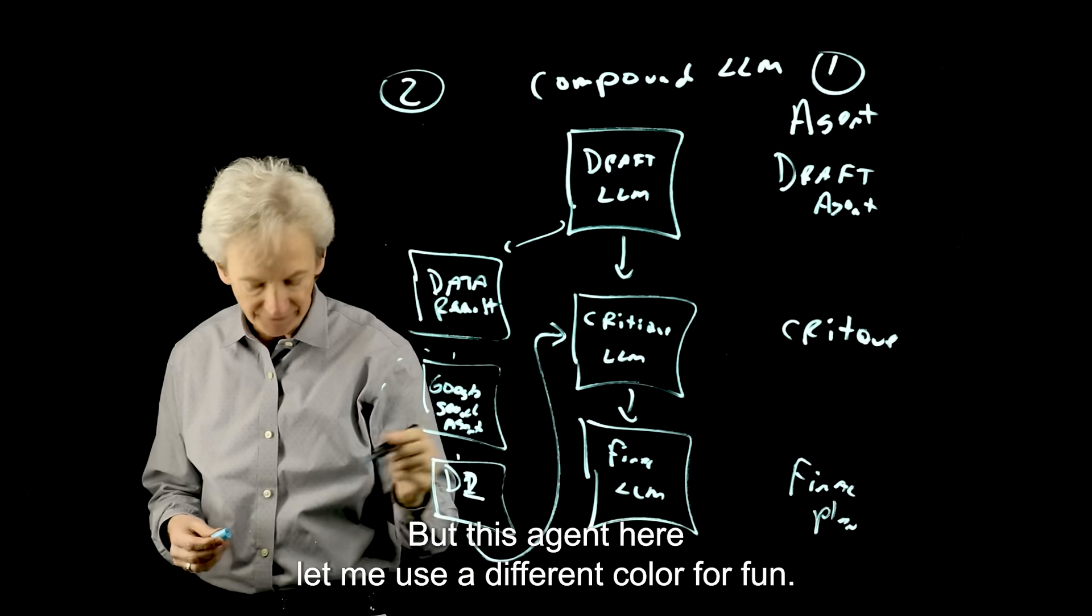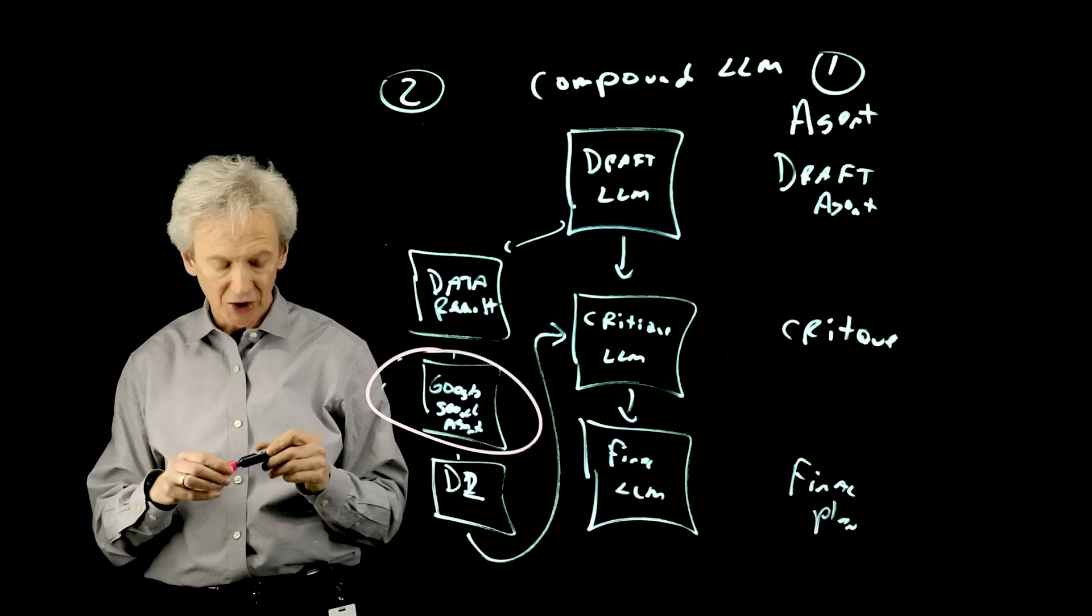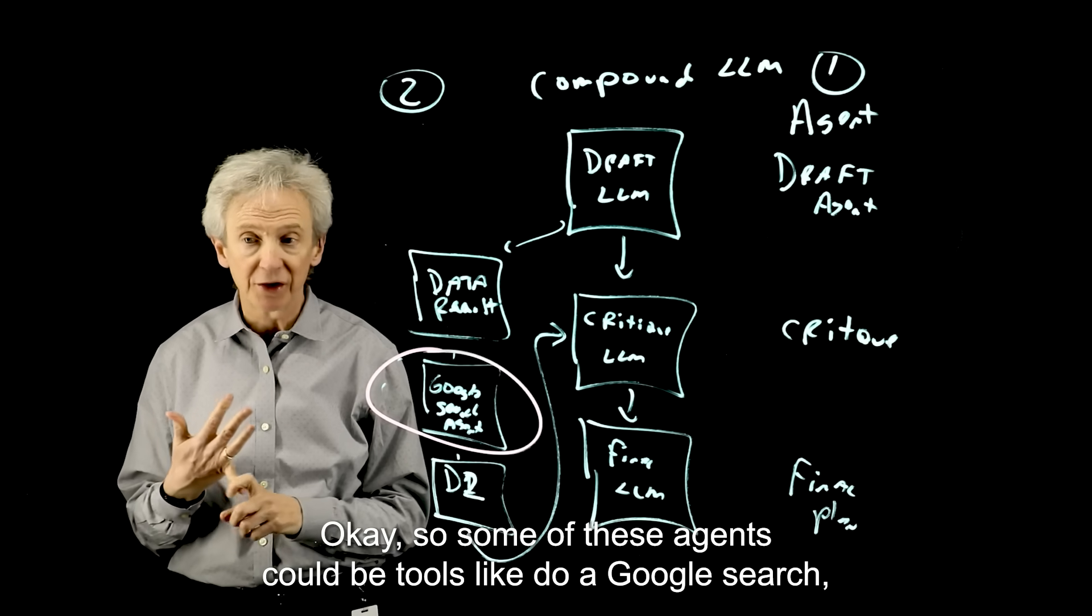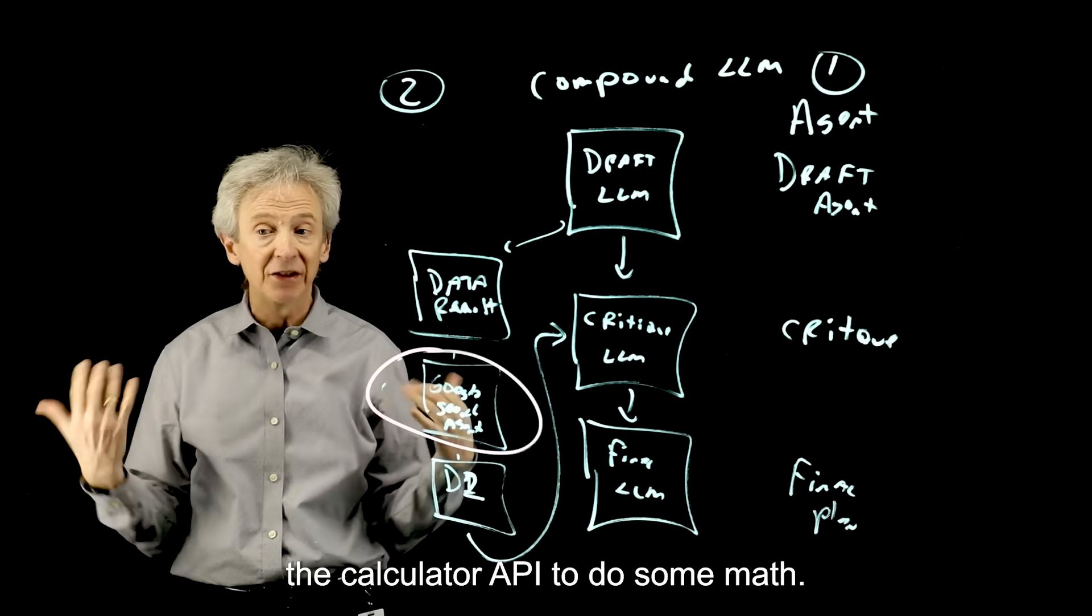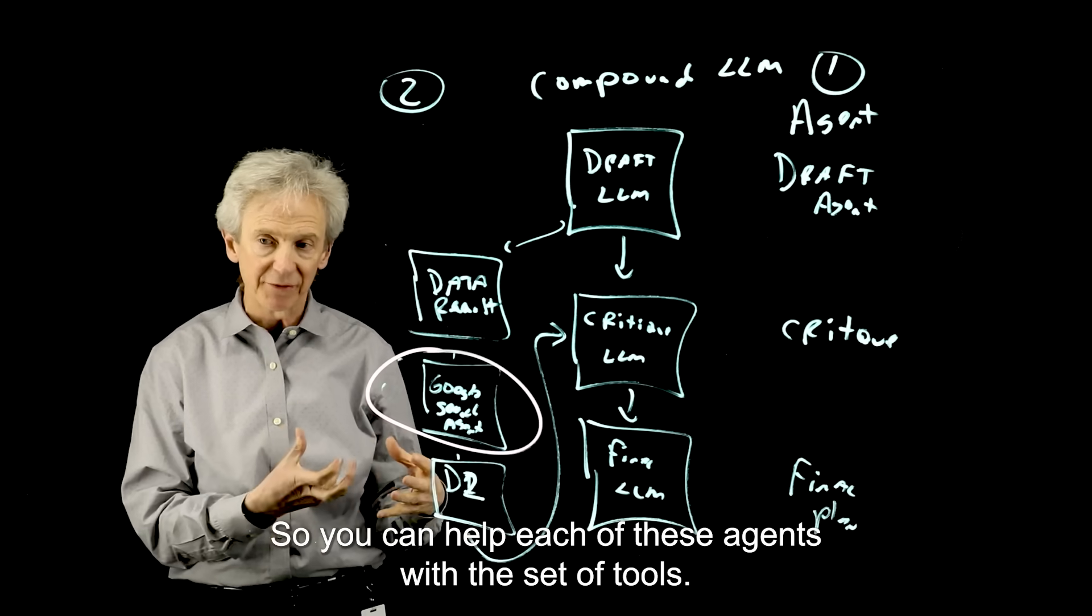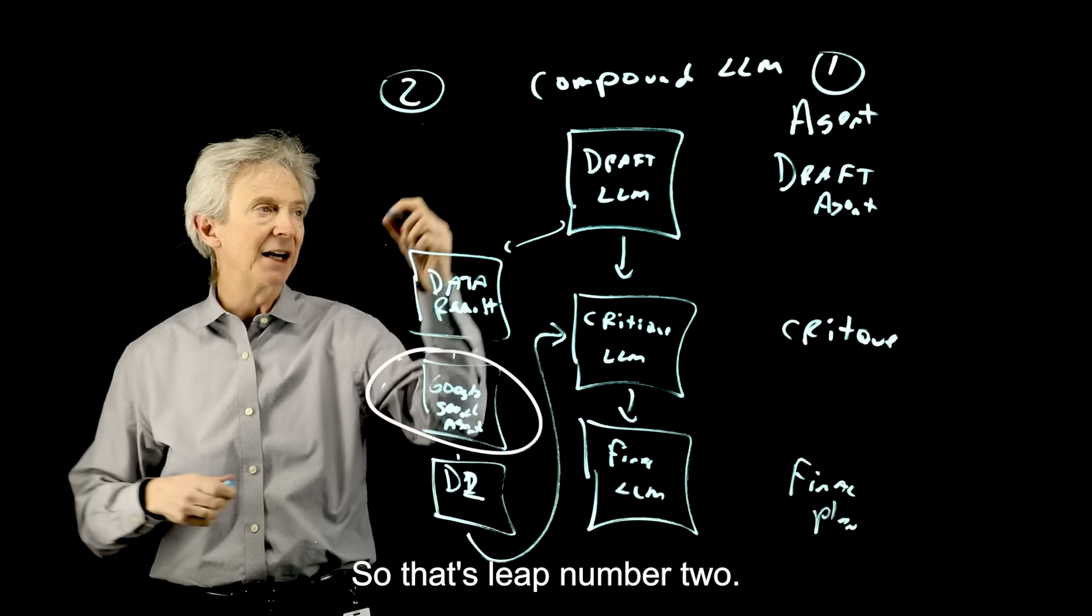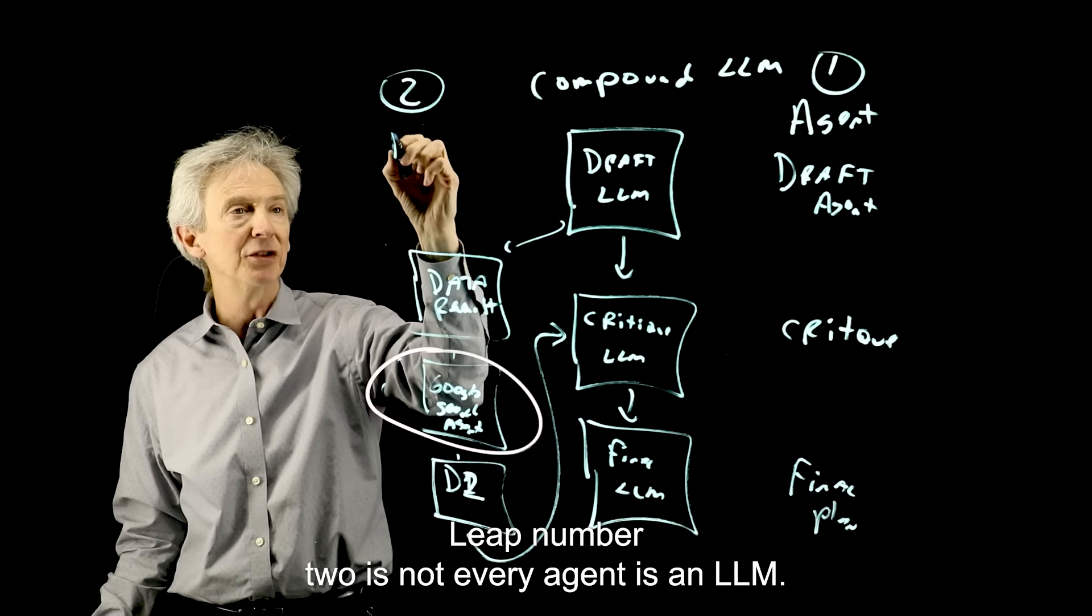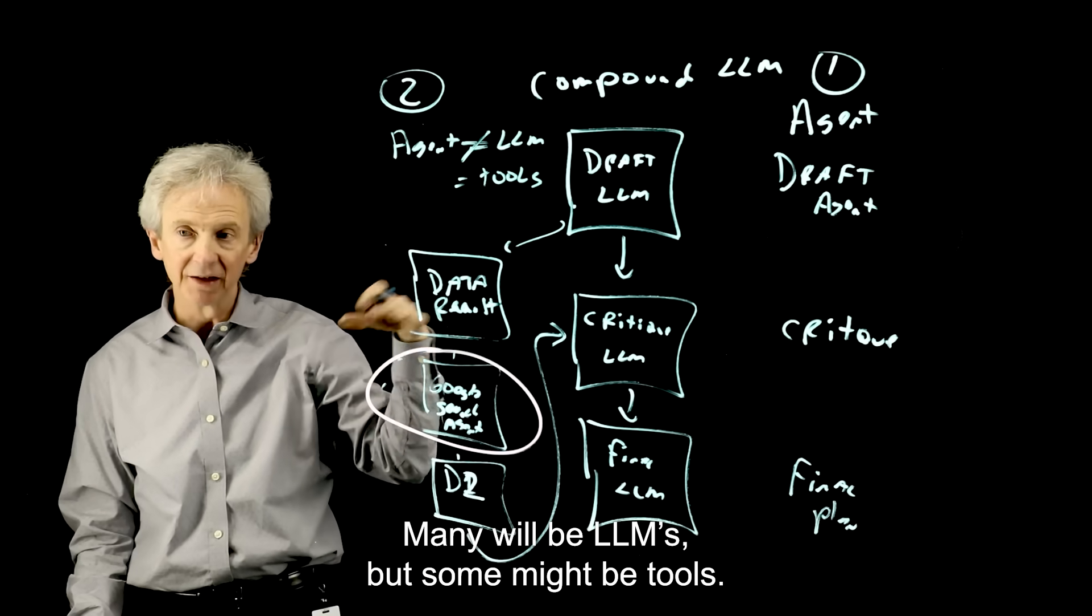But this agent here is not an LLM, it's just a tool. Okay, so some of these agents could be tools like do a Google search, call an API to schedule an appointment, be a calculator API to do some math. So you can help each of these agents with a set of tools. So some of these agents won't necessarily be an LLM, they'll be a tool. Okay, so that's leap number two. Leap number one is call these things agents. Leap number two is not every agent is an LLM. Some might be tools. Many will be LLMs, but some might be tools.